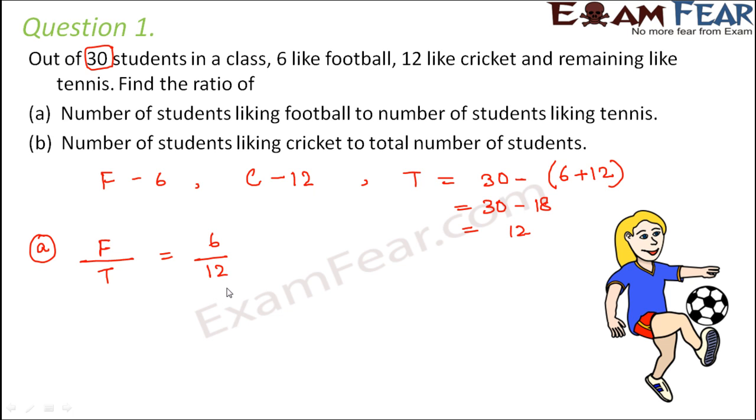So is it in its simplest form? No, not really, because they have highest common factor and the highest common factor is 6. Therefore, you divide both the terms by 6. So this becomes 1 by 2. That is equal to 1 is to 2. Therefore, the ratio of number of students liking football to the number of students liking tennis would be 1 is to 2.